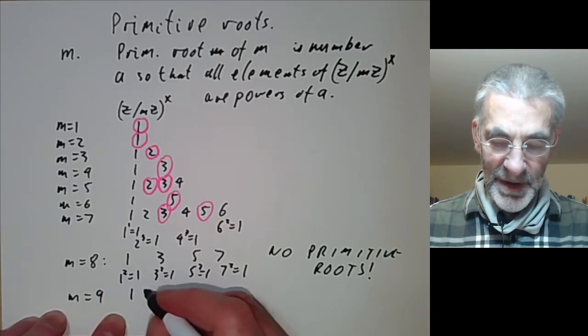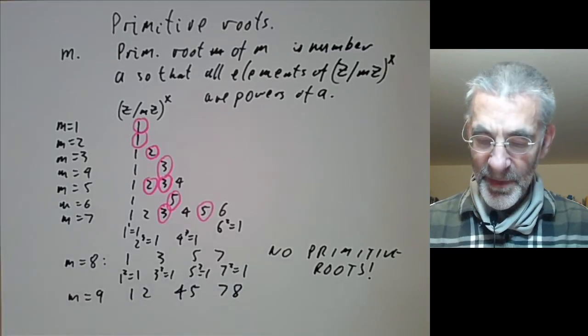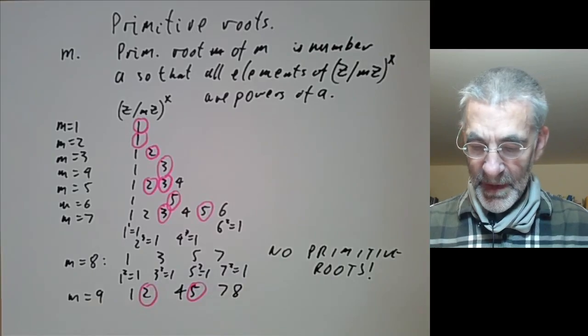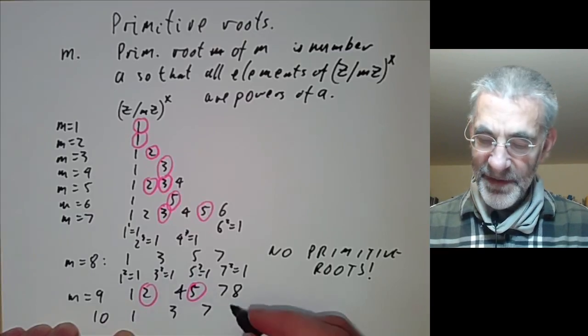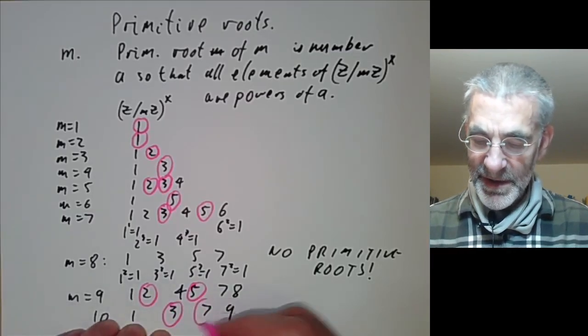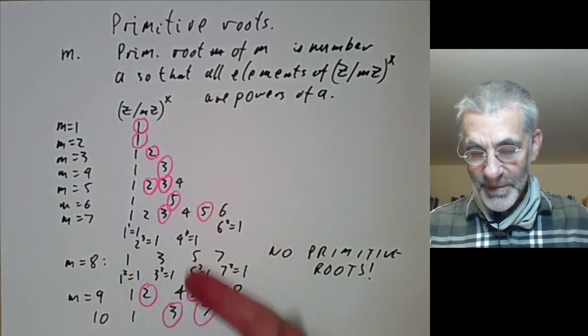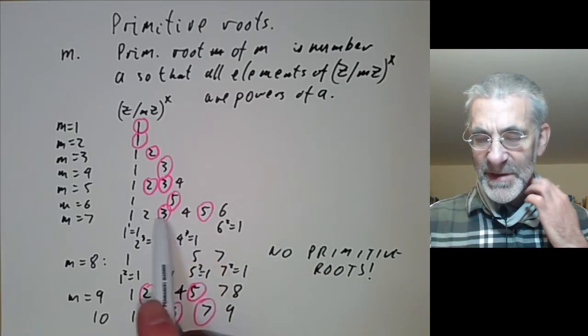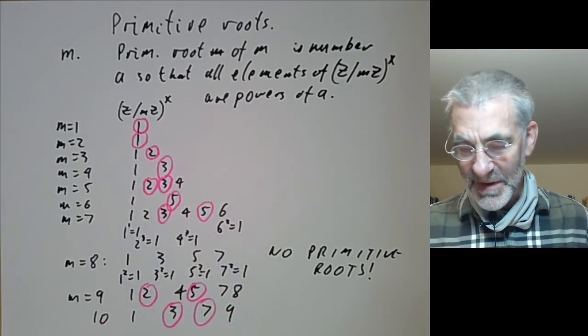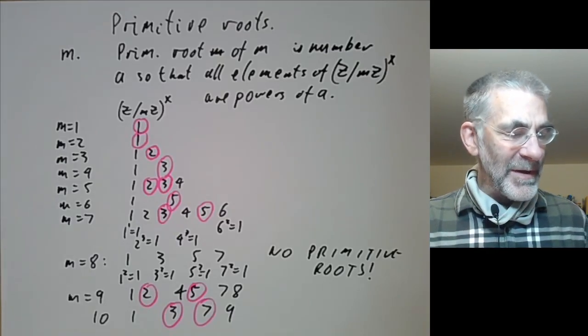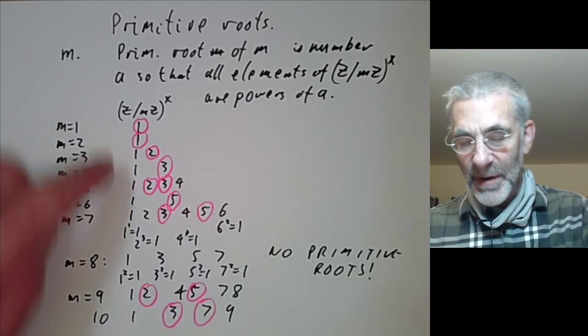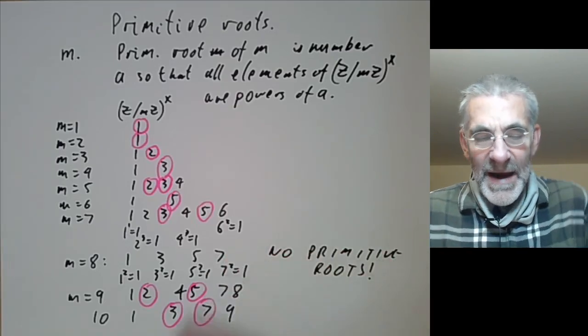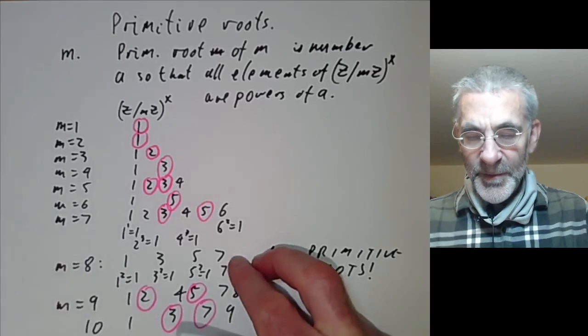For m equals 9 we have elements 1, 2, 4, 5, 7, 8 and you can check the primitive roots are 2 and 5. For m equals 10 the elements are 1, 3, 7, 9 and 9 squared is 1 so it's not a primitive root, but 3 and 7 are. Looking at this collection of data, the primitive roots seem an almost random collection of numbers, so we need to answer: which numbers have primitive roots, how many are there, and what use are they?